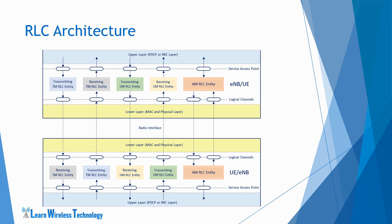Summarizing the overall picture: the RLC entity receives RLC SDUs from the upper layers — which is the PDCP or RRC layer — via a service access point, which is then sent as an RLC PDU to the lower layers, i.e., the MAC layer, via a logical channel. This RLC PDU is delivered to the peer RLC entity. An RLC entity also receives an RLC PDU from its peer RLC entity. The RLC PDU can be a data PDU received from PDCP or a control PDU received from RRC. The RLC SDUs can be of variable size and are converted to RLC PDUs for transmission only when the lower layer notifies about a transmission opportunity.